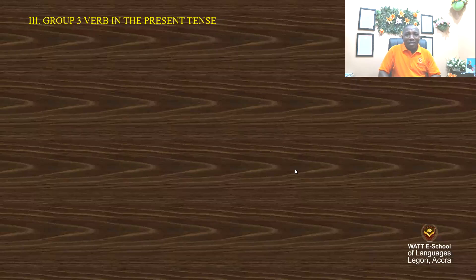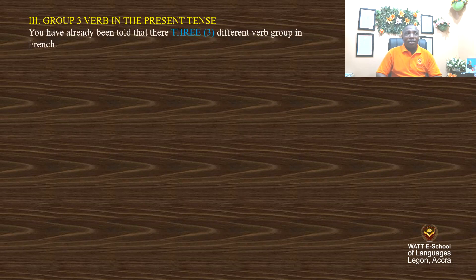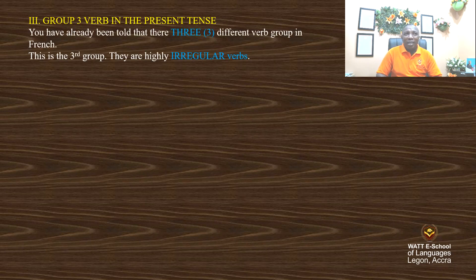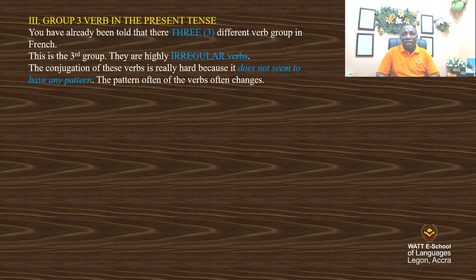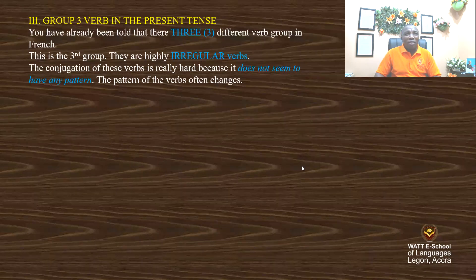Welcome to What is School of Languages. Today we shall have a look at the Group 3 verbs in the present tense. You have already been told that there are three different verb groups in French. This is the third group — they are highly irregular verbs. The conjugation of these verbs is really hard because it does not seem to have any pattern at all; the pattern often changes.